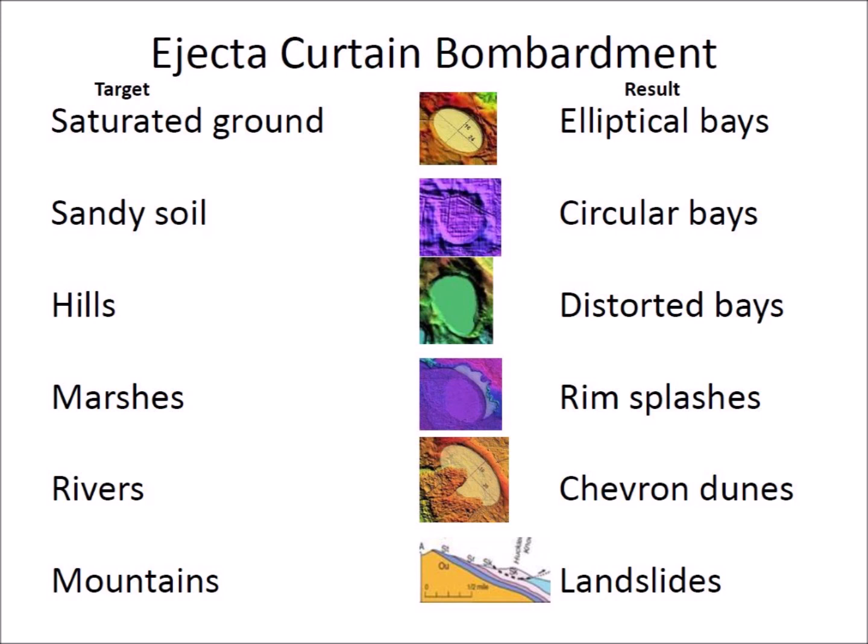This presentation has considered the effects that the impacts of glacier ice boulders had on different terrain types: impacts on saturated ground produced elliptical bays; impacts on sandy soil that could not be liquefied produced circular bays; impacts on hills produced bays distorted by mudflow; impacts on marshes produced sandy splashes around the bays; impacts on rivers created tsunamis that formed chevron dunes on adjacent bays; impacts on mountains triggered landslides; and many ice boulders shattered upon striking hard ground and left no trace. Now that we know that the eastern part of the United States was bombarded by a barrage of huge glacier ice boulders, we have to look at the geology of the region in a way that considers impact cratering with subsequent modifications by terrestrial processes.